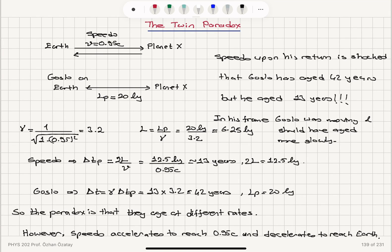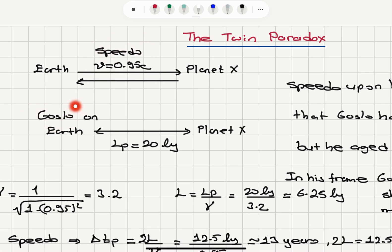Now we will talk about what seems to be a paradox — the twin paradox. Speedo and Goslo are twins. Goslo is on Earth, and basically Goslo is observing Speedo travel from Earth to planet X with a speed of 0.95c, that is 0.95 times the speed of light. Speedo goes to planet X and comes back to Earth. The distance between Earth and planet X, because planet X appears to be stationary with respect to Earth, is the proper length measured by Goslo on Earth — 20 light years away.